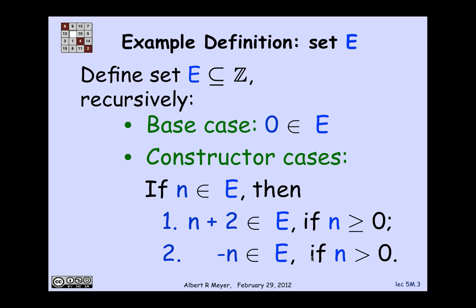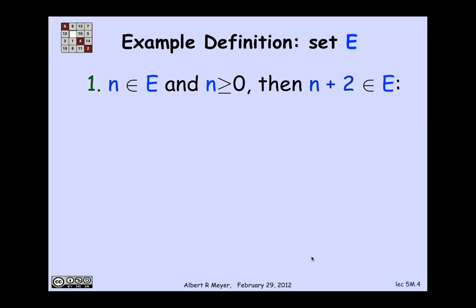The second constructor is that if you have an n that's in E, you can negate it, you can take minus n, providing that n is positive.